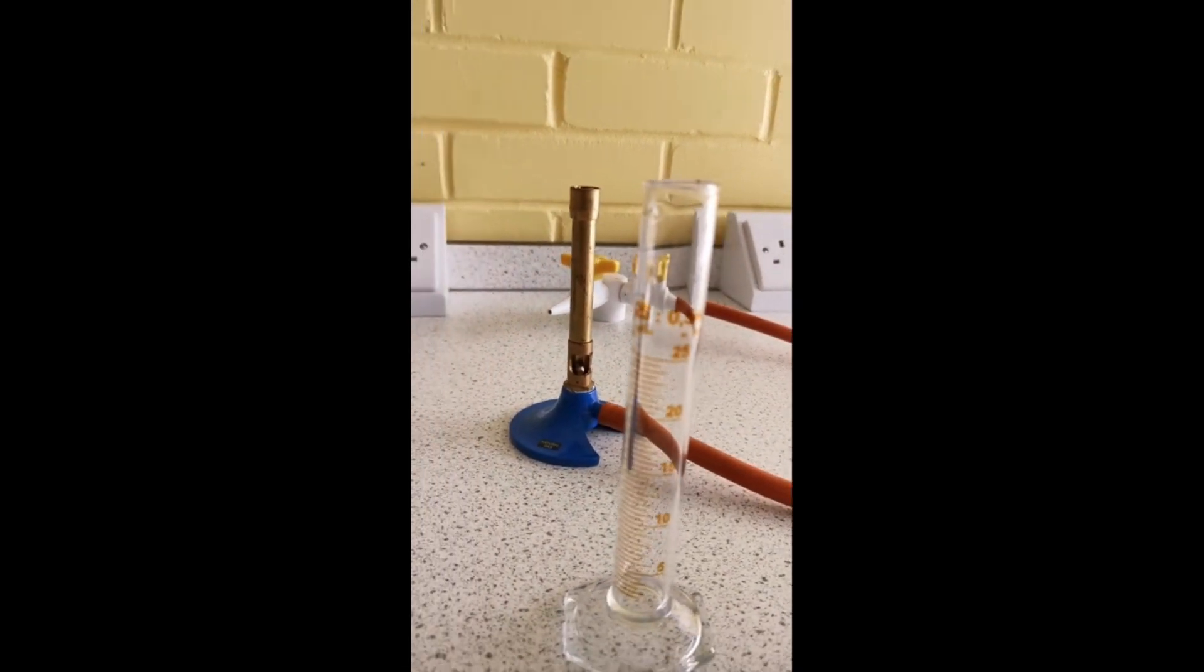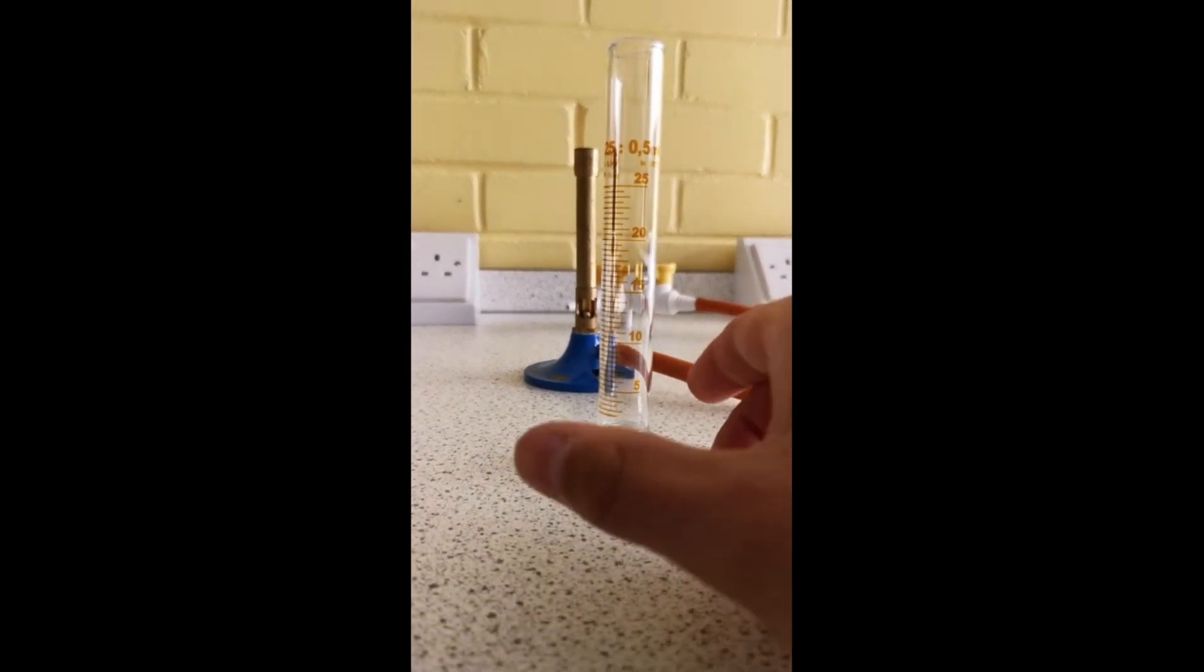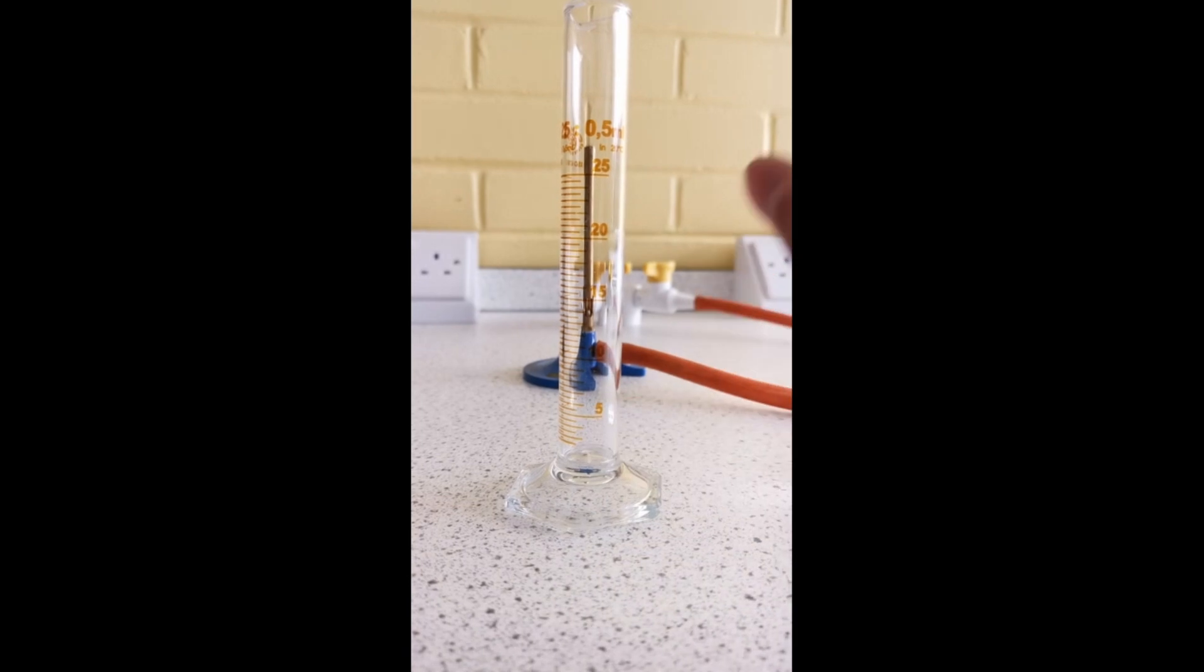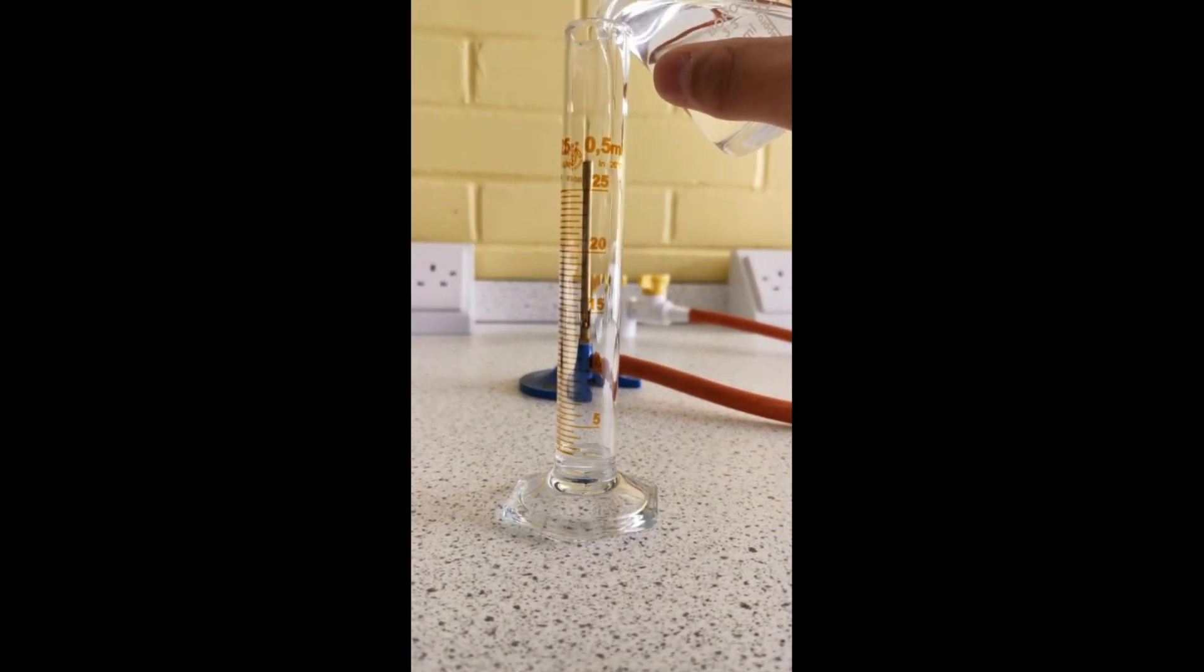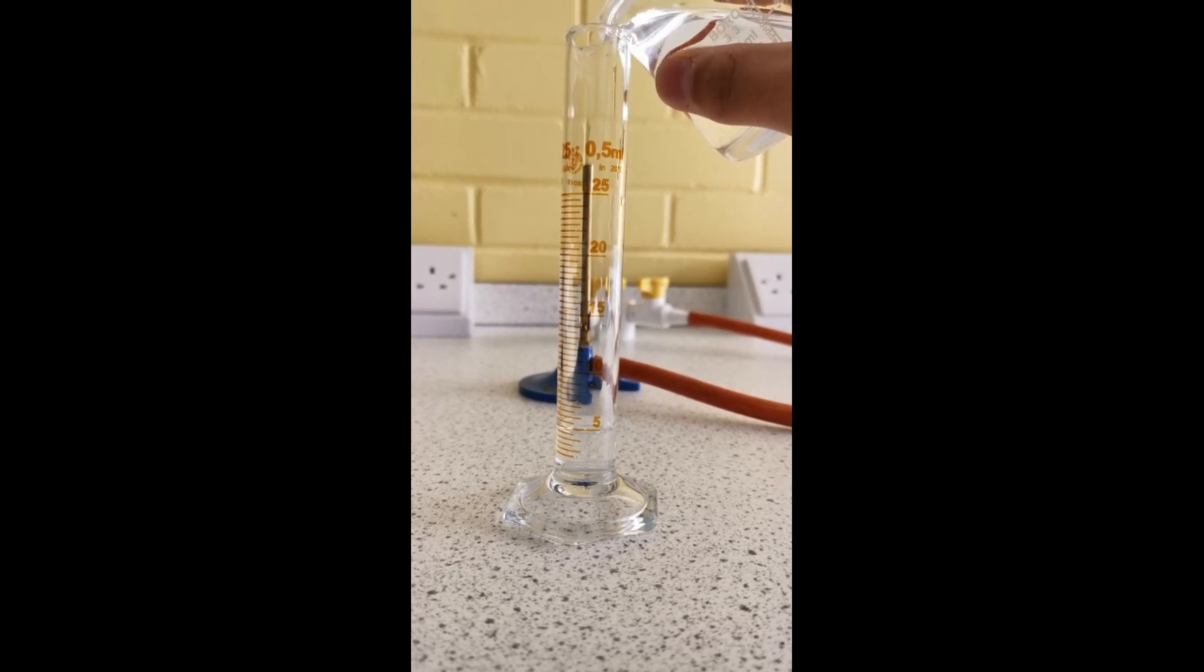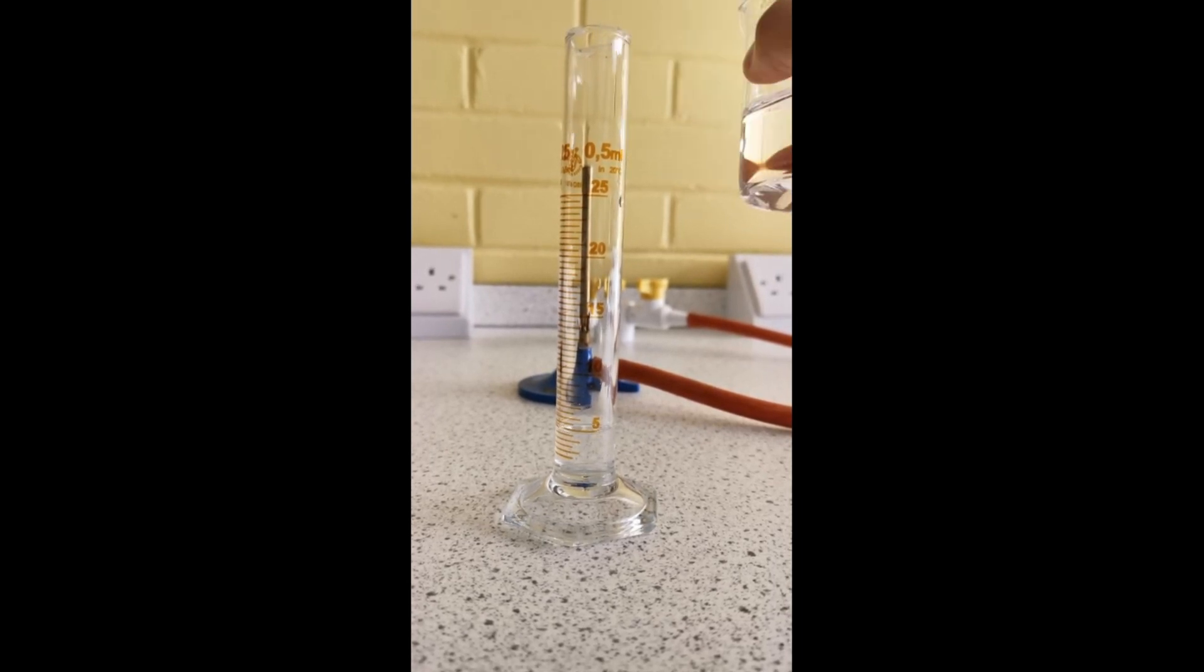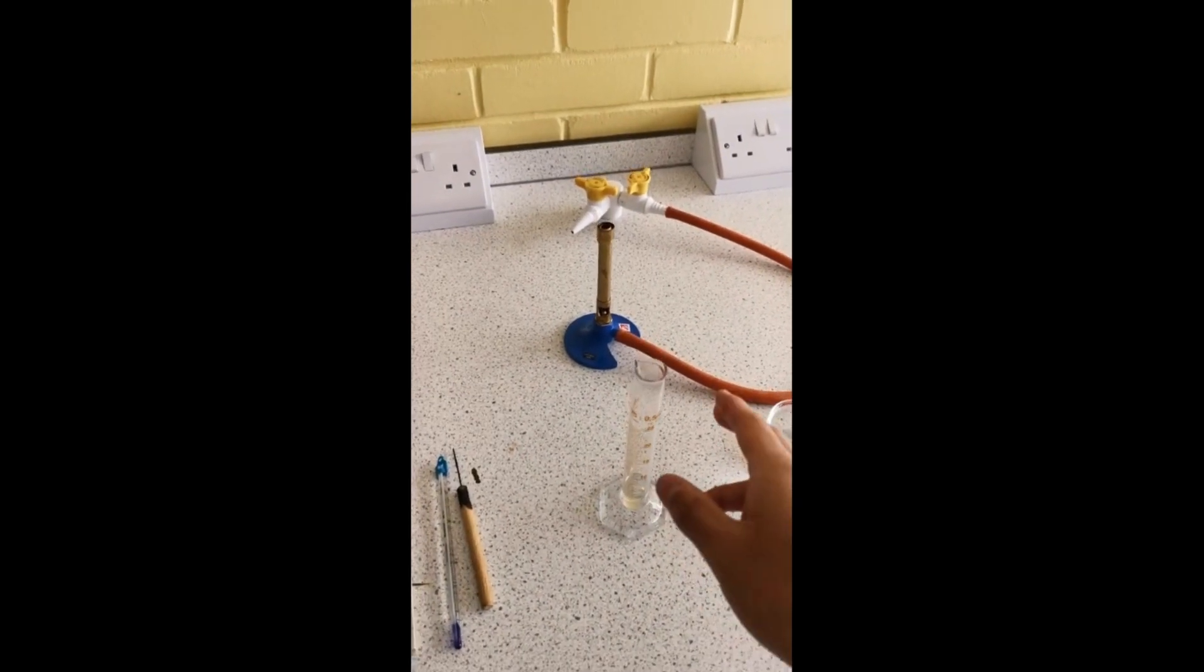I've got my water in the beaker. I'm going to go down to eye level. Here's the five. I'm going to very carefully pour in the water until it reaches the five mark. Perfect, so that's our five milliliters of water.